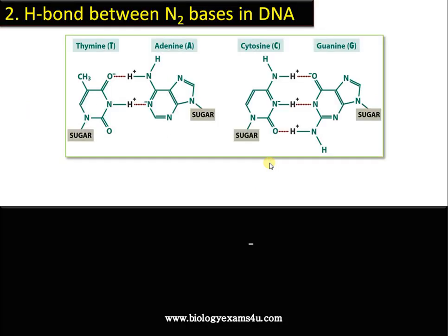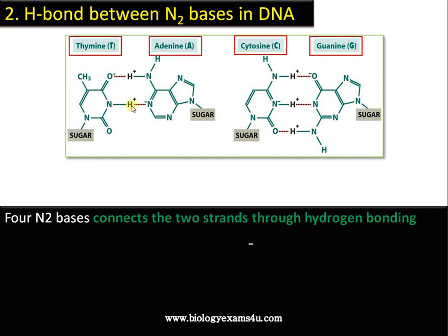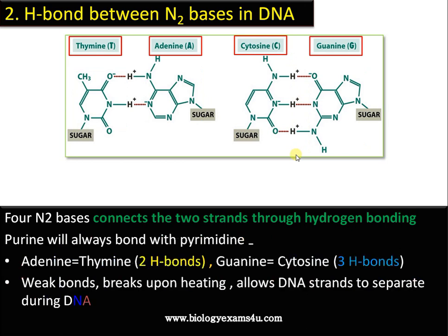The second bond in DNA is the hydrogen bond between nitrogenous bases. The nitrogenous bases are thymine, adenine, cytosine, and guanine. Adenine and guanine are two-ringed purines, while cytosine and thymine are one-ringed pyrimidines. Adenine pairs with thymine via two hydrogen bonds, and guanine pairs with cytosine via three hydrogen bonds. This is a comparatively weak bond that separates during DNA replication and can also be broken by heating.